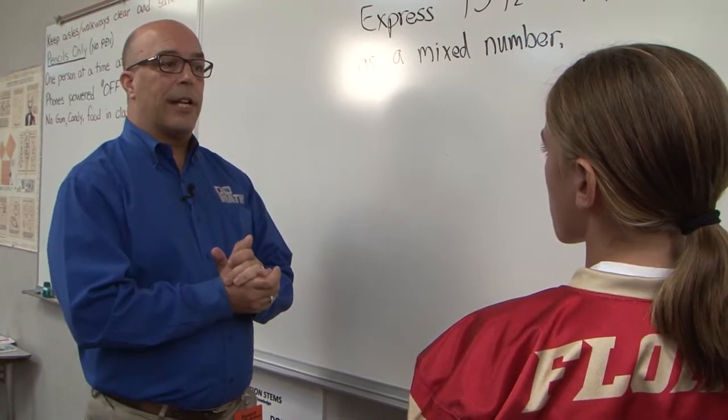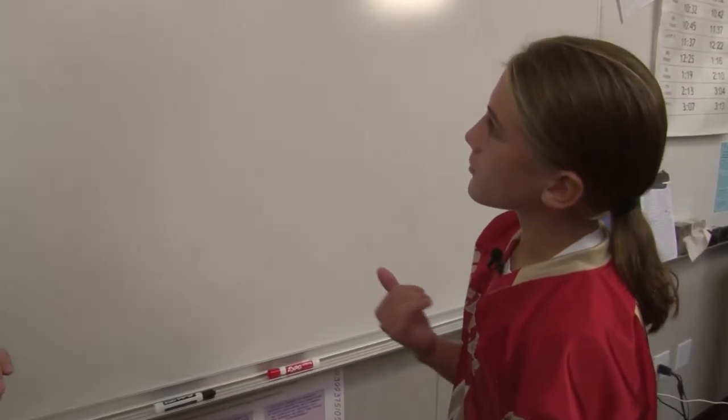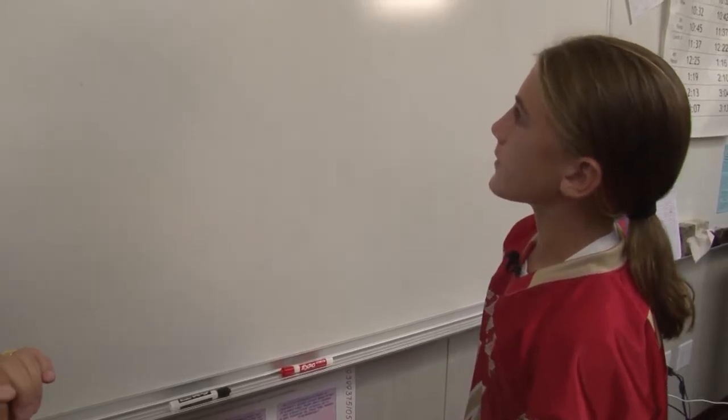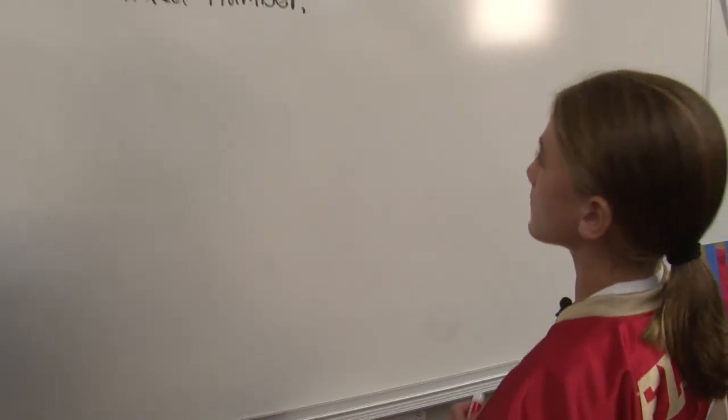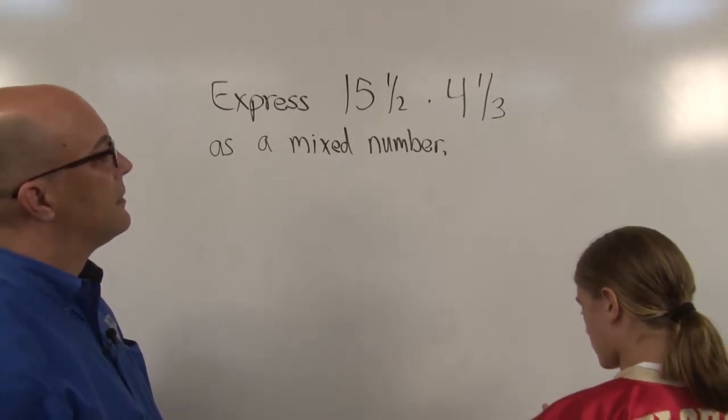Okay, so how would you like to approach this? How would you like to tackle this problem? First I would make both numbers an improper fraction, and then multiply. All right, by all means let's start.